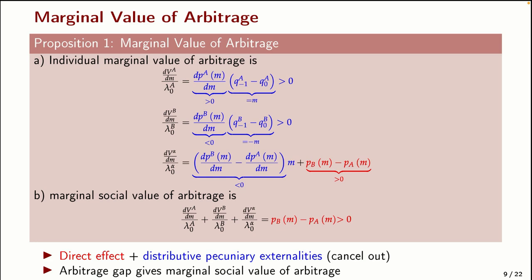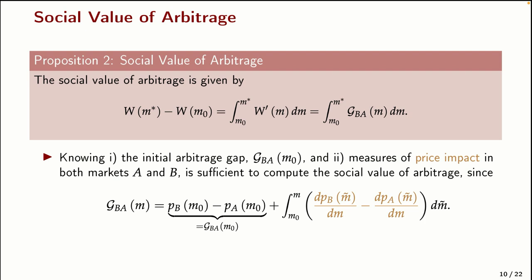Since we know the marginal social value equals the arbitrage gap, we can use the fundamental theorem of calculus and integrate over all gaps along the curve to get the total social value. To compute this, we need the initial gap and measures of price impact to figure out how the gap evolves as it closes with more arbitrage. Let me illustrate graphically: on the x-axis is the amount of arbitrage, on the y-axis are prices P_A and P_B, and the shaded area under the curve of price differences represents the total social value — analogous to a Harberger triangle of surplus created.